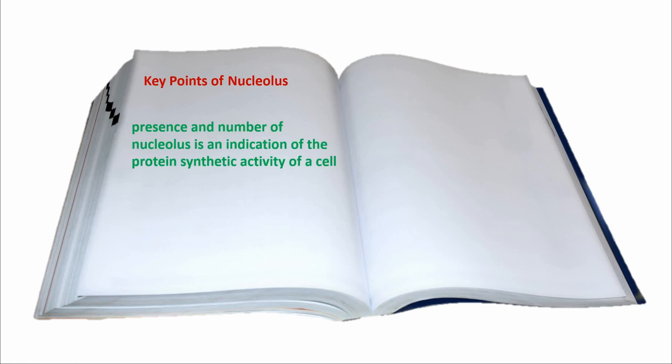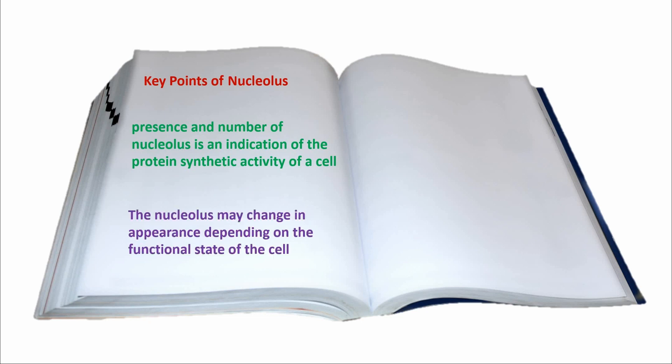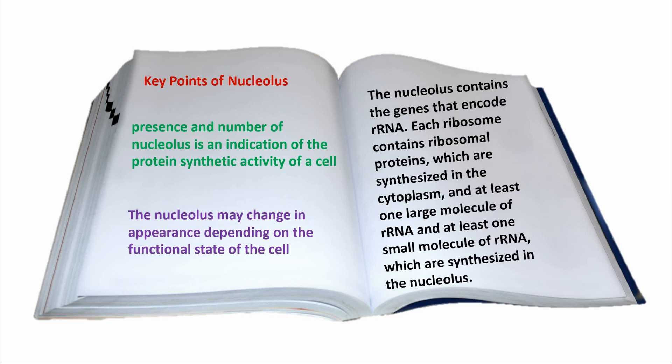Key points of the Nucleolus: the presence and number of nucleoli is an indication of the protein's synthetic activity of a cell. The nucleus may change in appearance depending on the functional state of the cell. The nucleus contains the genes that encode rRNA. Each ribosome contains ribosomal proteins which are synthesized in the cytoplasm, at least one large molecule of rRNA, and at least one small molecule of rRNA, which are synthesized in the nucleus.